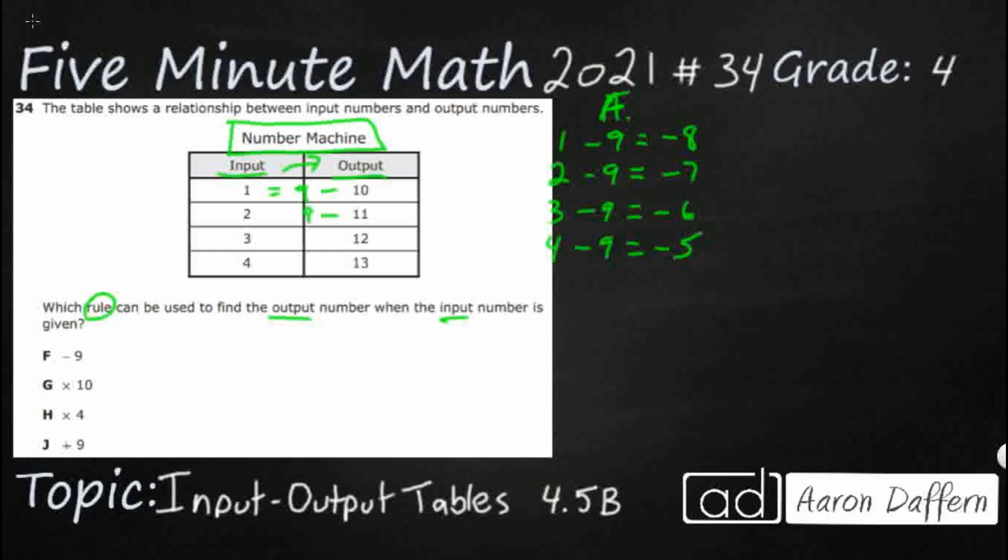12 minus 9 equals 3. And 13 minus 9 equals 4. But you notice that we're going from right to left. That's not how we add or subtract. We don't subtract right to left. We subtract left to right.